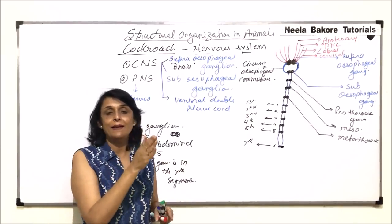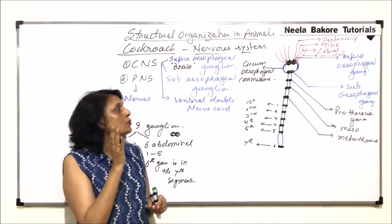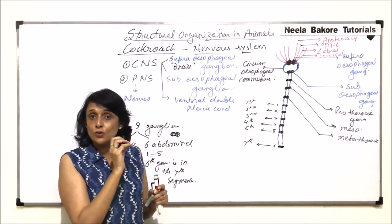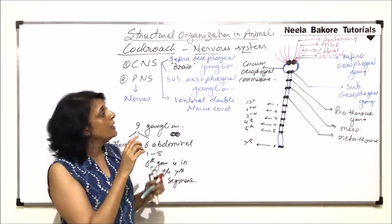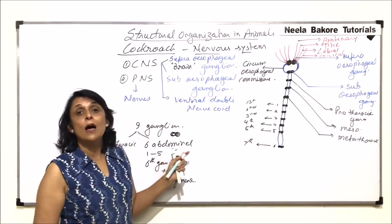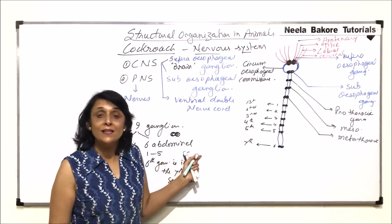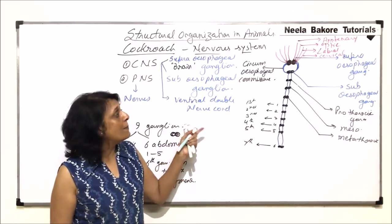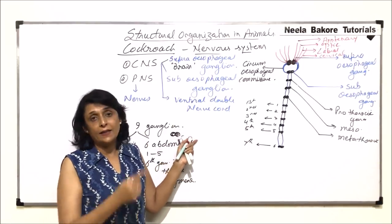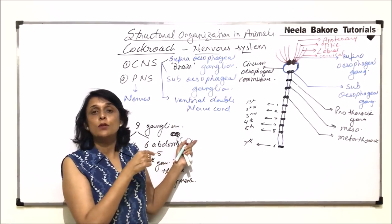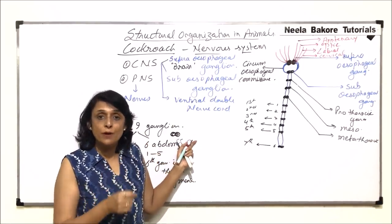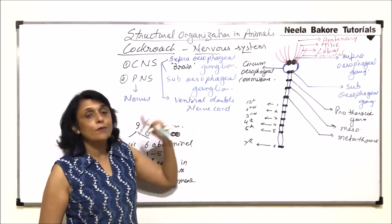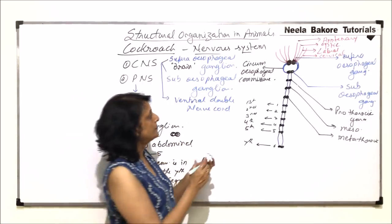To summarize the supraesophageal nerves: the first goes to the antenna, the second is optic going to the eye, the third is labral going to the upper lip or labrum, and the fourth goes to the neck region.